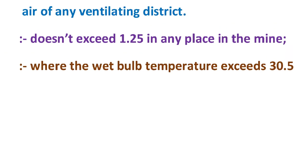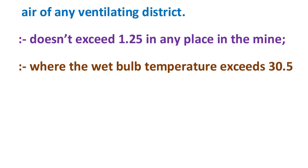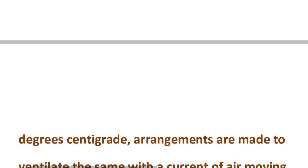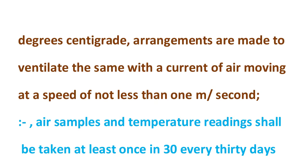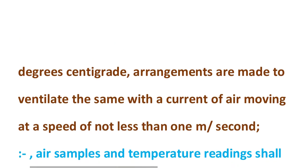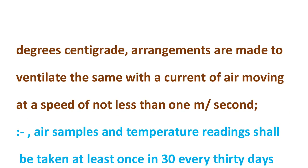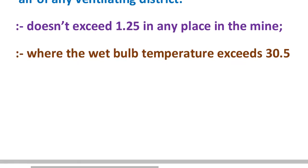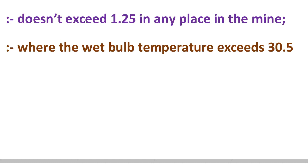Where the wet bulb temperature exceeds 30.5 degrees, arrangements must be made to ventilate with a current of air moving at a speed not less than one meter per second. We will ensure air speed at such locations is never below one meter per second. The regulation specifies that wet bulb temperature must not exceed 33.5 degrees, but wherever it exceeds 30.5 degrees, these precautions apply.